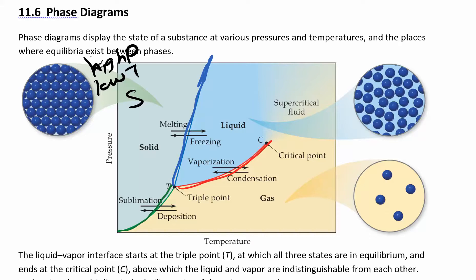You're just plotting pressure versus temperature, figuring out experimentally what you have at every given temperature and pressure. Over here in this corner at high pressure and low temperature, pressure means you're forcing those molecules to be together. Low temperature means they don't have a lot of energy — they're not moving around, they can't get away from each other. They're stuck to each other, so those molecules are going to be in a solid form.